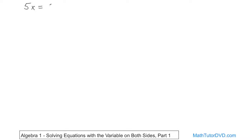What if you had the equation 5x equals 2x plus 6? You want to solve for x, but you have 5x over here and 2x over here. A lot of students look at that and say, well, what do I do? The answer is you have to combine all of the x's together and get them all on one side. You could move these over there or move those over here — it doesn't matter, you can do it either way and you're going to get the same answer.